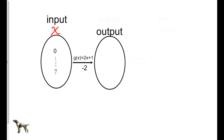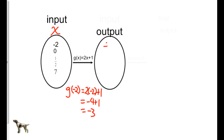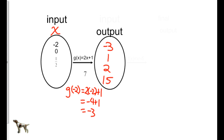I'm going to plug negative 2 in for x. G at negative 2 equals 2 times negative 2 plus 1, so negative 4 plus 1 is negative 3. So x is negative 2 and y, or the output, is negative 3. Plugging 0 in for x: 2 times 0 is 0, plus 1 more is 1. Plugging one half in for x: 2 times one half is 1, plus 1 more is 2. And plugging in 7: 2 times 7 is 14, plus 1 more is 15.